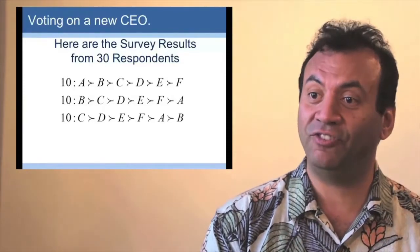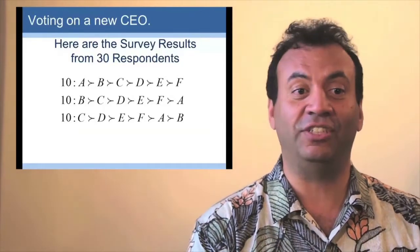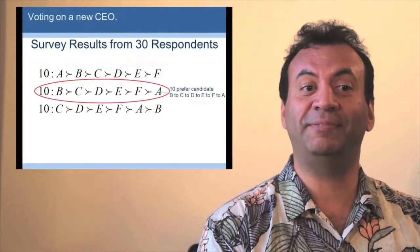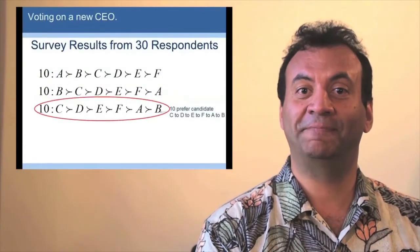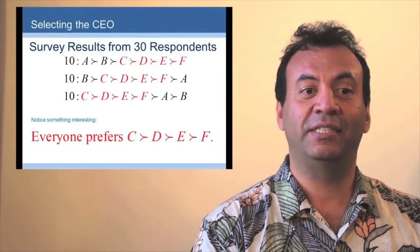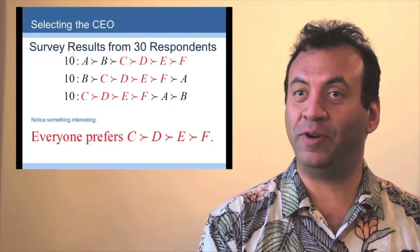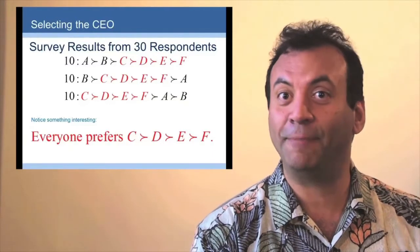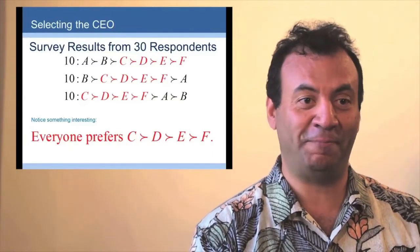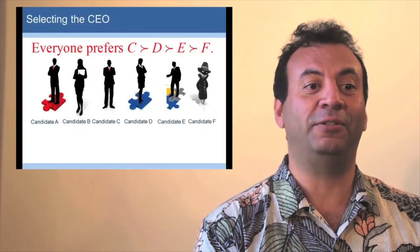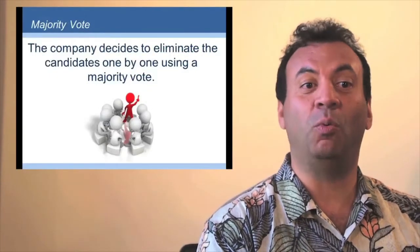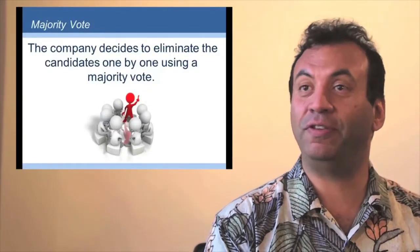Now, let's see how choosing a bad logic can make a bad decision. So here are our respondents. Okay, here's everyone preferring C to D to E to F. Now, do you want F to win? I can make it happen. Let's see how we do that. So first we say, let's eliminate the candidates one by one using majority vote.